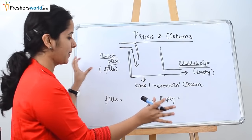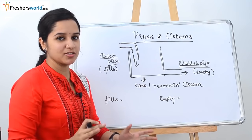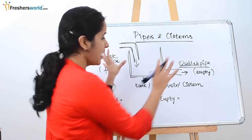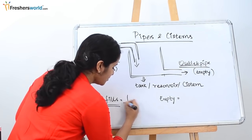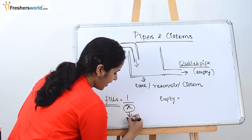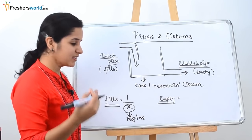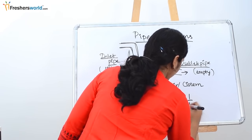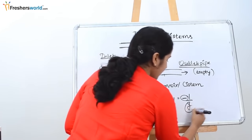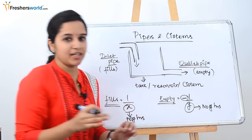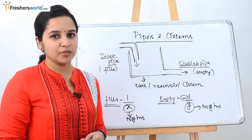This can be a tank, a reservoir, or a system — in your question they may change the term, but they all mean the same thing. It will always have an inlet pipe and an outlet pipe. The inlet pipe fills it, and we denote it as 1/x, where x is the number of hours it takes to fill the tank. Similarly, emptying or leakage is denoted as minus 1/y, because it is emptying the water. y is the number of hours taken to empty the tank.